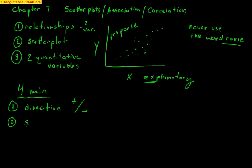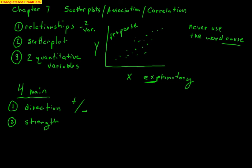The second thing to examine is strength — how strong is the relationship? Are the points really close together, showing a strong relationship where it looks like x is truly explaining y? Or are they all over the place? For the most part you might see a positive relationship, but if it's scattered, it's not really strong. We're going to get to a point where we talk about a line of best fit, and the closer your points are to that line, the stronger the relationship.